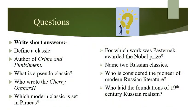These are a few questions that can be asked from what we have discussed. Define a classic. Name the author of Crime and Punishment. What is a pseudo-classic? Who wrote The Cherry Orchard? Which modern classic is set in Piraeus? The answer is Zorba the Greek. For which work was Pasternak awarded the Nobel Prize? It is Doctor Zhivago. Name two Russian classics. Who is considered the pioneer of modern Russian literature? Who laid the foundations of 19th century Russian realism? These are all very short answer questions.